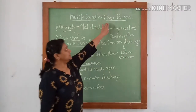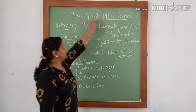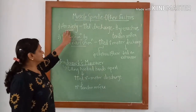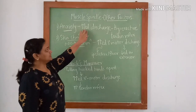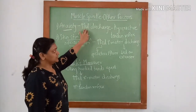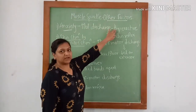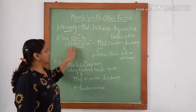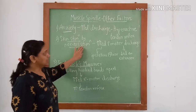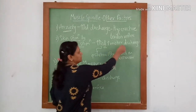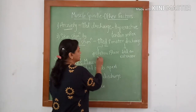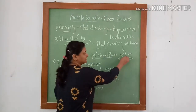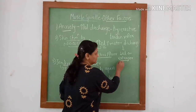There are several other factors which also influence the muscle spindle response. First is anxiety. Anxiety increases the gamma discharge which leads to hyperactive tendon reflexes. Second is skin stimulation by any noxious stimulant. Here there is increased gamma motor discharge to the flexor muscle and decreased discharge to the extensor muscle.